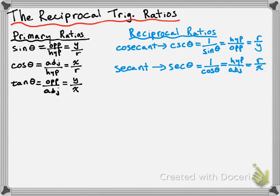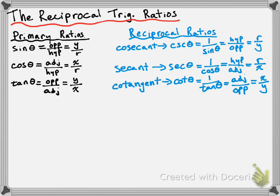The last reciprocal ratio is cotangent, written as COT of theta. Cotangent of theta is the reciprocal of tangent, so we get 1 over tangent of theta. We could also write it as adjacent over opposite, or x over y.